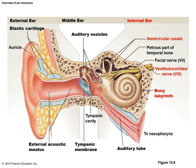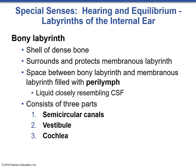Here we can see the diagram going from the external ear to the middle ear and now looking at the internal ear. The internal ear structure has a bony labyrinth consisting of three primary areas: the semicircular canals, the vestibule (a small bulb), and the cochlea — the nautilus-like shell that curls around itself. The bony labyrinth is a shell of dense bone that surrounds and protects the membranous labyrinth. The space between the bony labyrinth and the membranous labyrinth is filled with perilymph.